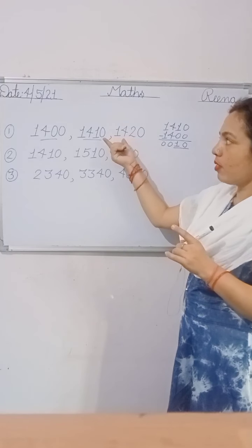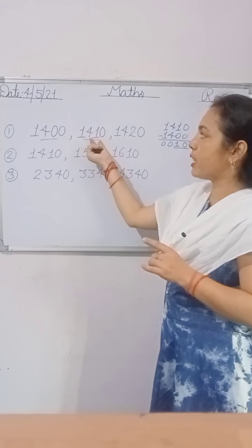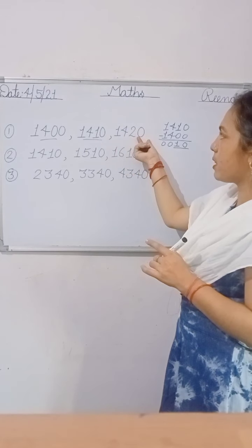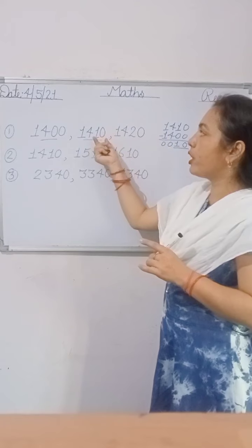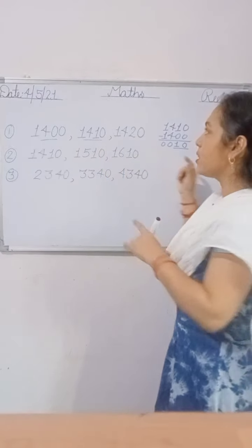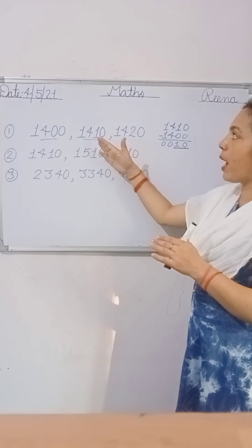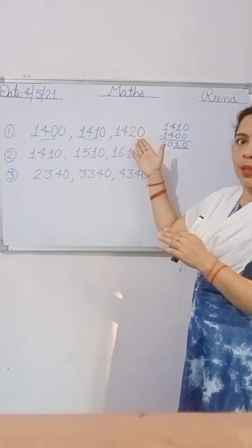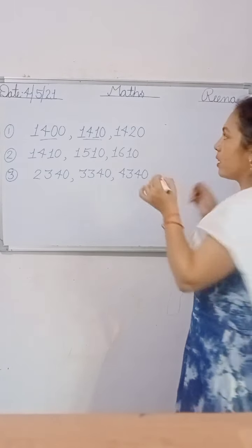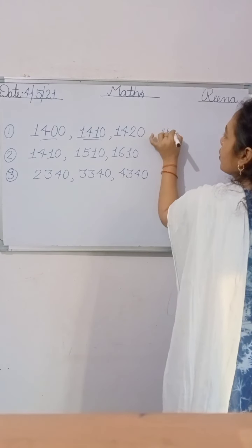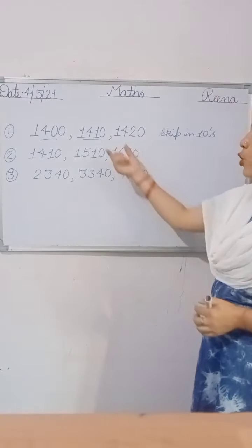Now, comparing the place values: the 1s place is 0, the 1s place is 0, the 10s place is 0, and the 10s place is 1. In the next number, the 1s place is 0, the 10s place is 2. That means in all numbers, only the 10s place is changing — by 10 digits. So if you add 10 to the left side number, you get the right side number. That means you skip 10 times more, which means skip in 10s. If you skip in 10s, you get your next number.